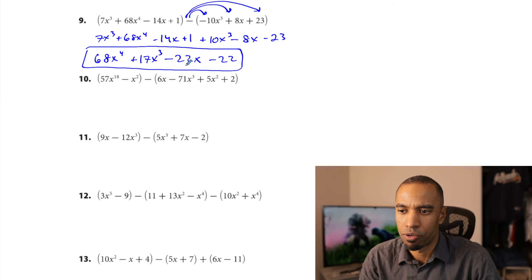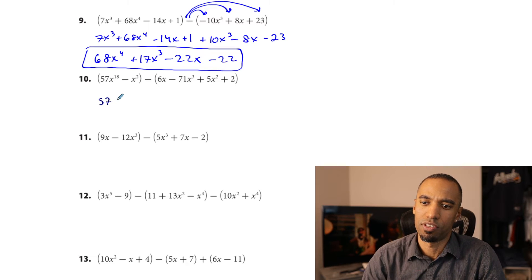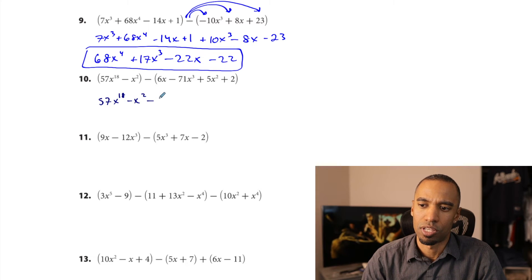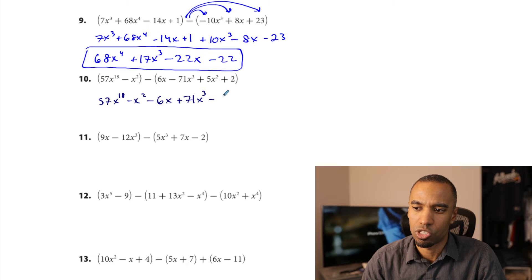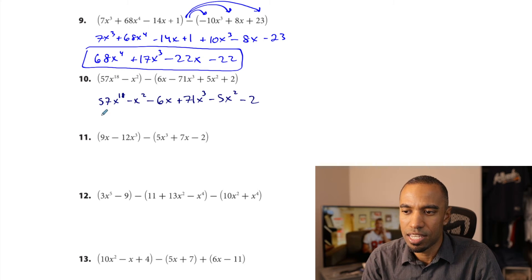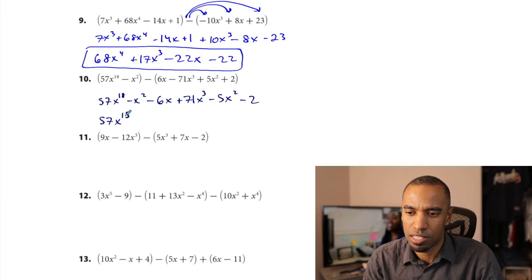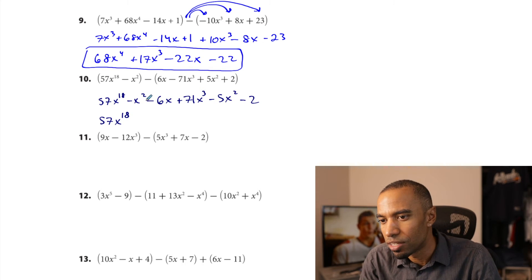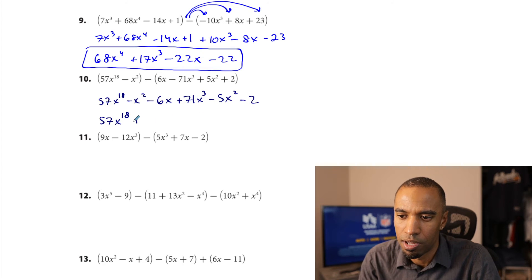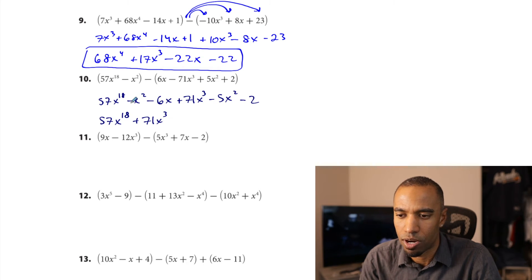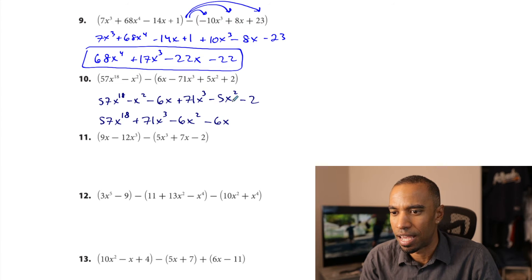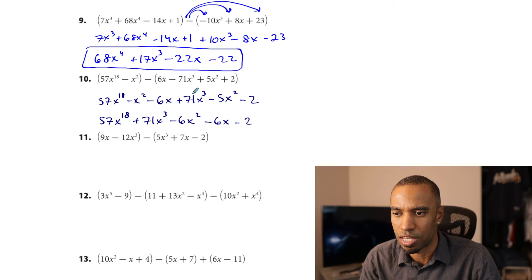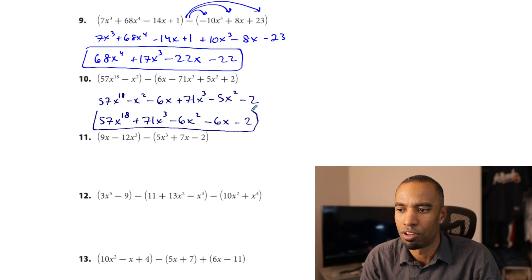Problem 10: rewriting without parentheses — 57x to the 18th minus x squared, minus 6x, then plus 71x cubed minus 5x squared minus 2, changing those signs. x to the 18th stays first — nothing combines. Then plus 71x cubed. For x squareds: negative x squared minus 5x squared is negative 6x squared. Then negative 6x combines with nothing, and negative 2 combines with nothing. Result: 57x¹⁸ plus 71x³ minus 6x² minus 6x minus 2.